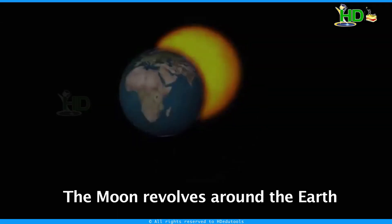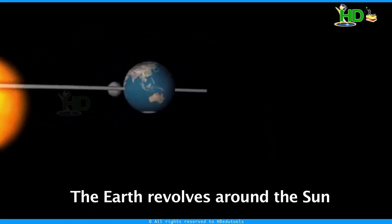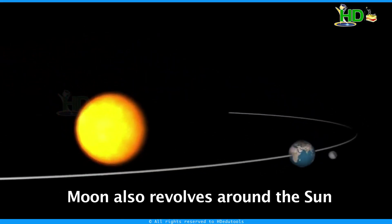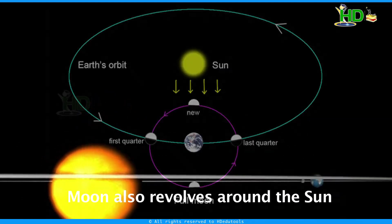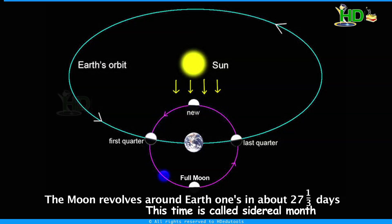Now, the motion of the moon. The moon revolves around the earth, and the earth revolves around the sun. Therefore, the moon also revolves around the sun along with the earth. The moon revolves around the earth once in about 27 and one-third days. This time taken by the moon to complete one revolution around the earth is called the sidereal month.